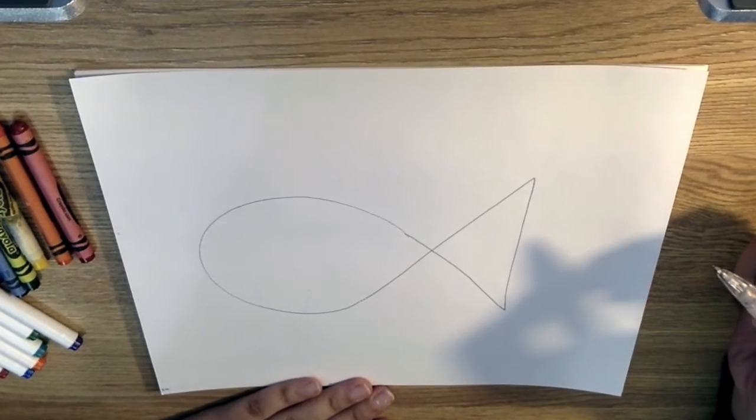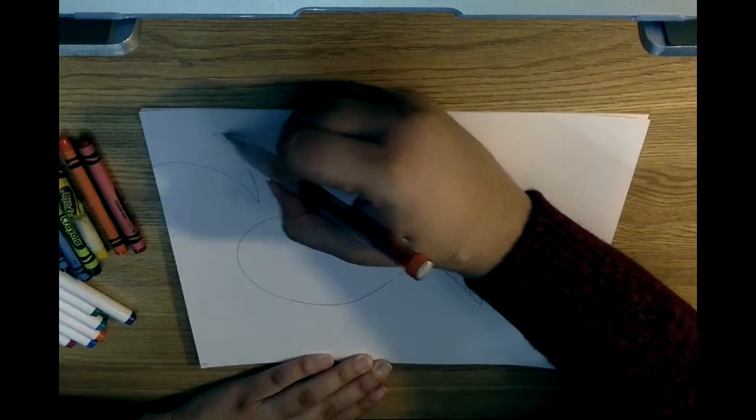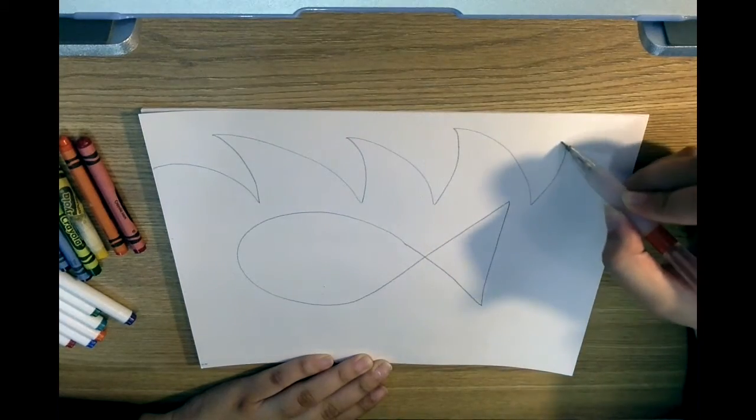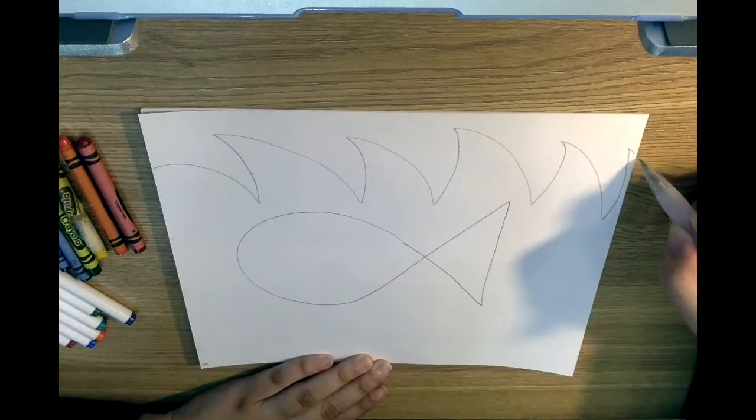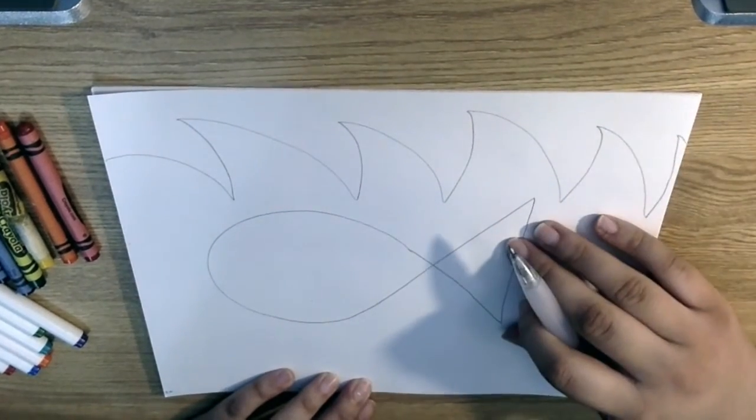After we have our fish done, we want to draw our ocean water and do little peaks like these. It kind of looks like shark fins, but it's our ocean water. Okay, now we have our ocean and our fish drawn.